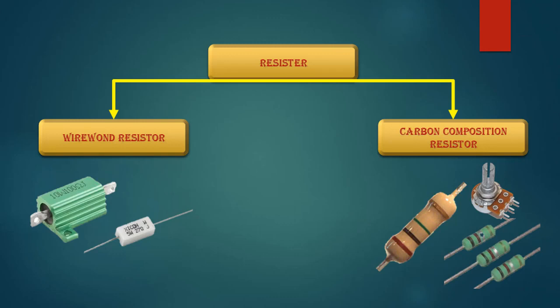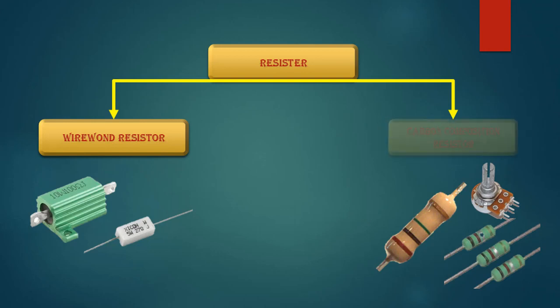When we use a carbon composition resistor on high wattage circuits, it may be damaged. It does not have the ability to control high voltage and high current. While the wire wound resistor is able to control high voltage and high current. The carbon composition resistor is further divided into two main kinds.